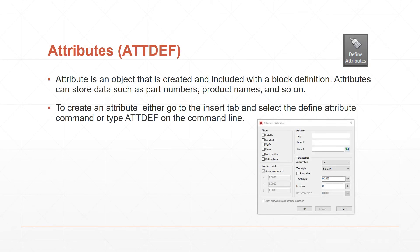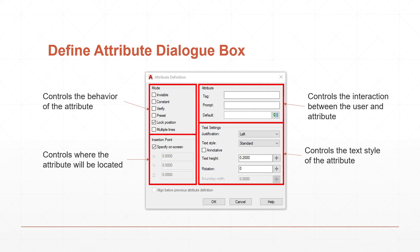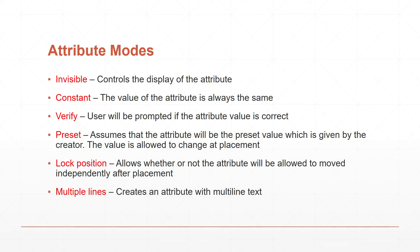Next, let's talk about attributes. We're going to create attributes on our title block. Attributes are nothing more than a block with some embedded text added into it — that embedded text you can change, or it'll ask you if you want to change it, depending on what mode you put it in. In the attribute dialog box, the top left box controls the behavior, the bottom left controls where you want to place it, the top right has the prompts, and the bottom right deals with what kind of text and how you want to control it. The different modes you'll see are invisible, constant, variable, preset, lock position, and multi-line.